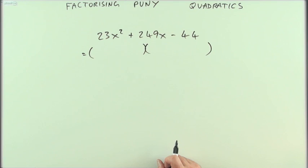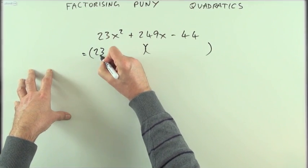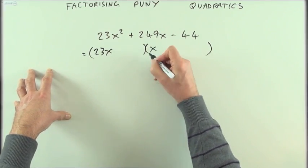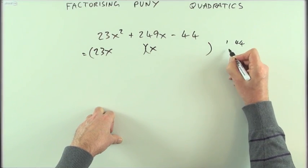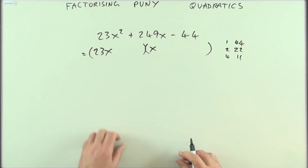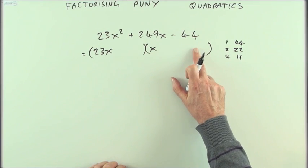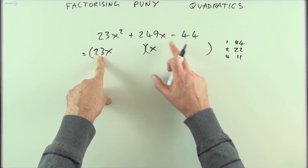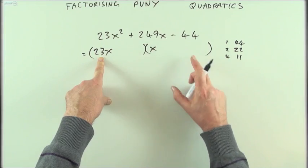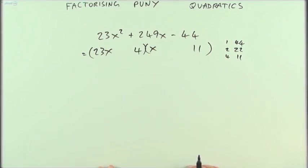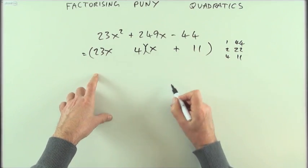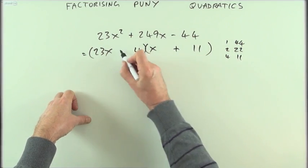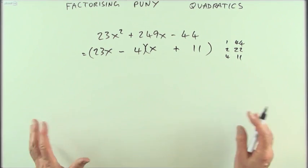Because 23 is a prime number, the x² coefficient can only be 23 times itself. The 44 factorizes as 1×44, 2×22, or 4×11. Whichever occupies the inner position gets multiplied by 23 — that's around 230 — but I'm looking for about 10, so it must be 11 and 4. The middle term is positive, so the larger gets it, and the signs must be opposite. That's the factorization — nothing to it.